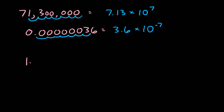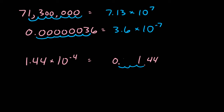Next, if we'd like to write the number 1.44 times 10 to the negative 4th in its standard form, we'd recognize that this is a really small number since we have a negative exponent. This means we need to move the decimal to the left a total of 4 places, fill in the spaces with zeros, and we wind up with the value of 0.000144.